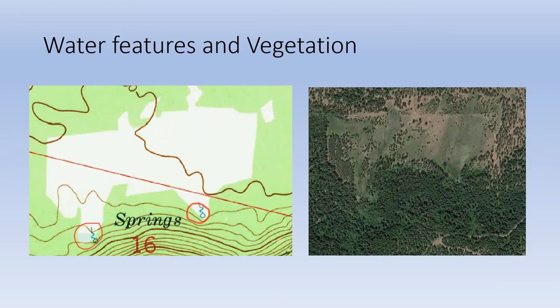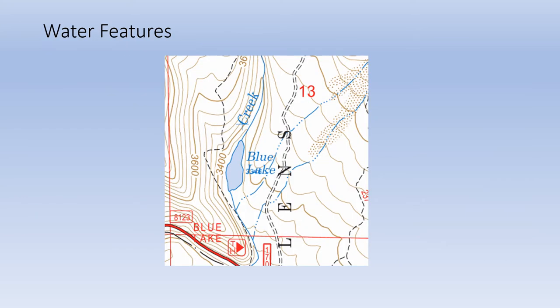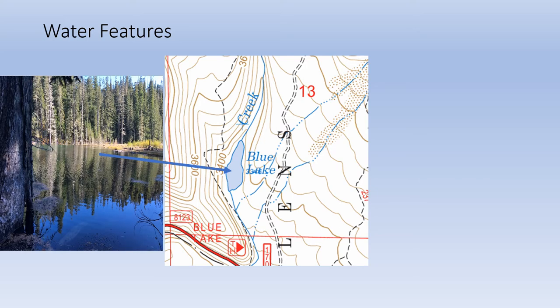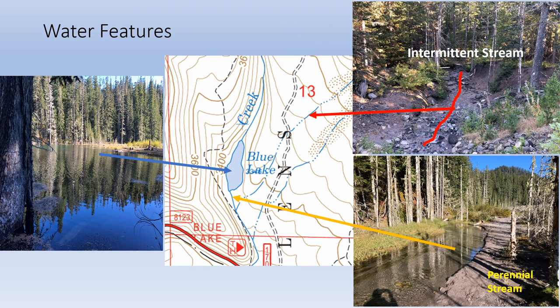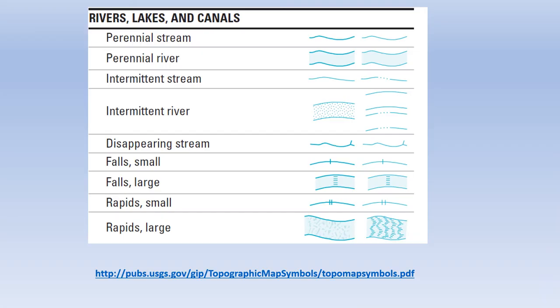Note the spring symbols, and also that the forested areas are solid green while the open areas are white. Map symbols for lakes and ponds are usually related to their size, while the size of streams — intermittent and perennial — can vary widely. Be sure to download a copy of the USGS topographic map symbols, and also check out the map legend for your map.